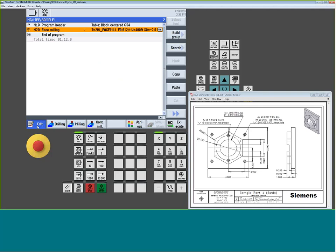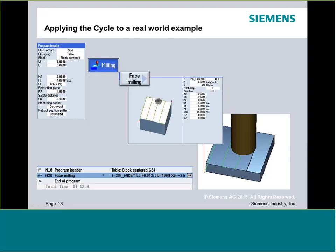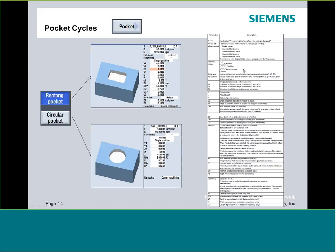The next operation is the pocketing cycle. There are two strategies within pocketing: rectangular and circular. We'll apply the circular pocket but take a quick look at rectangular features first. When you select Pocket from the milling menu, the vertical soft keys let you choose between rectangular and circular, and then the parameters are tailored to that specific cutter path type.